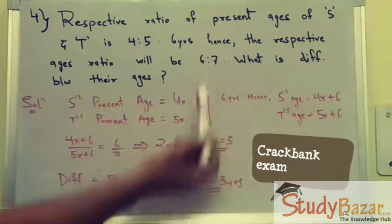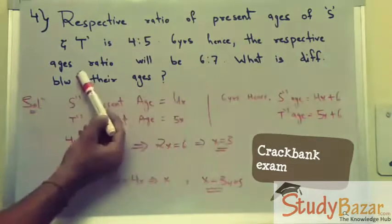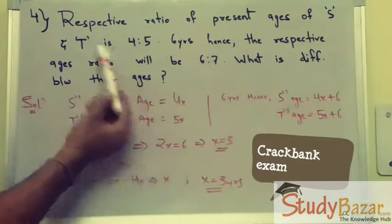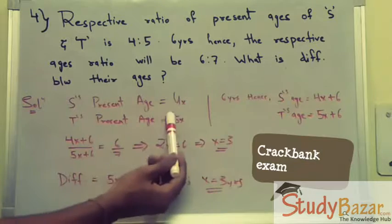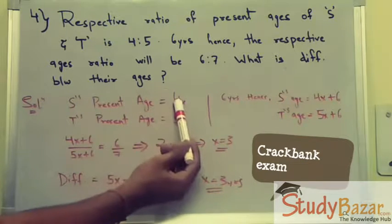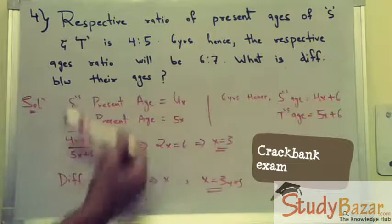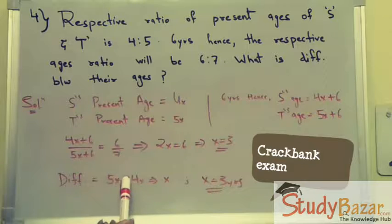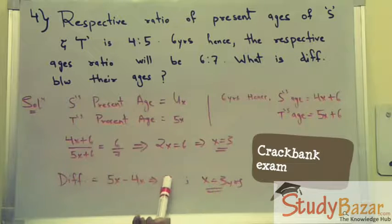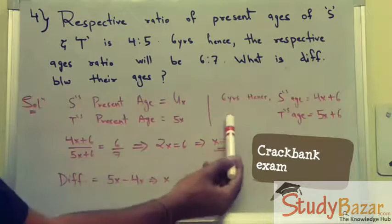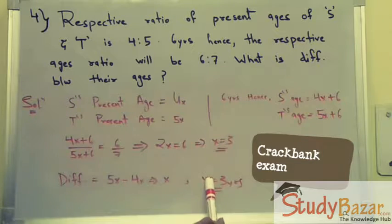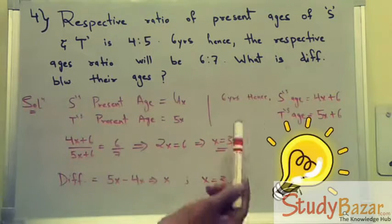Now we have to find the difference between the ages of S and T. T's age is 5x and S's age is 4x, so the difference is 5x minus 4x, which equals x. We have already calculated x as 3, so the difference between their ages is 3 years.